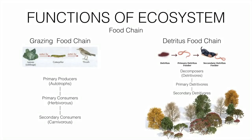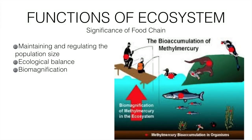Food chains are of two types: grazing food chain and detritus food chain. Grazing food chain starts from living autotrophs or producers and goes from producers to primary consumer to secondary consumer and beyond. Detritus food chain starts from dead bodies — it goes from dead organic matter to primary decomposer to secondary decomposer and so on.